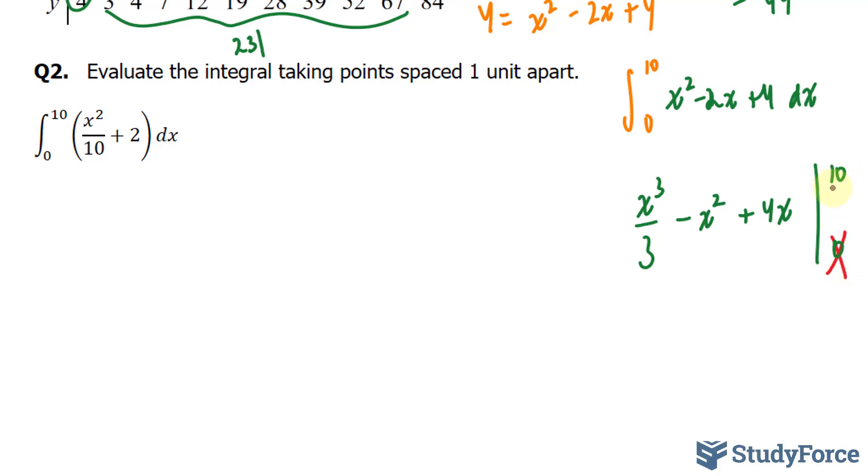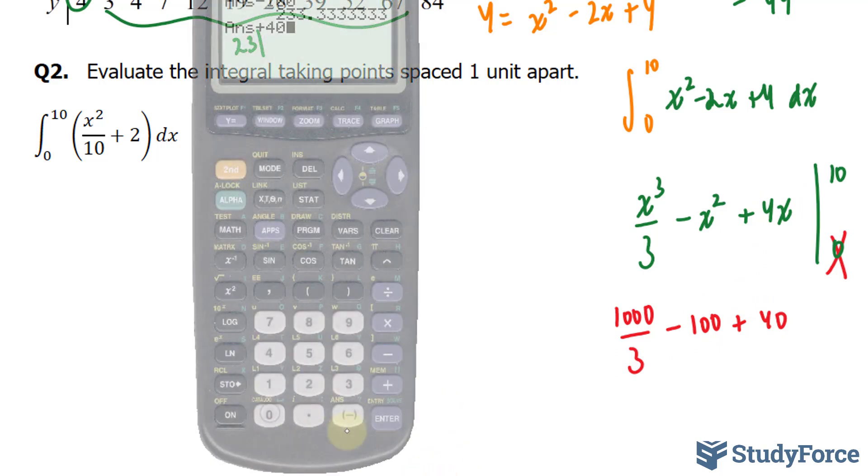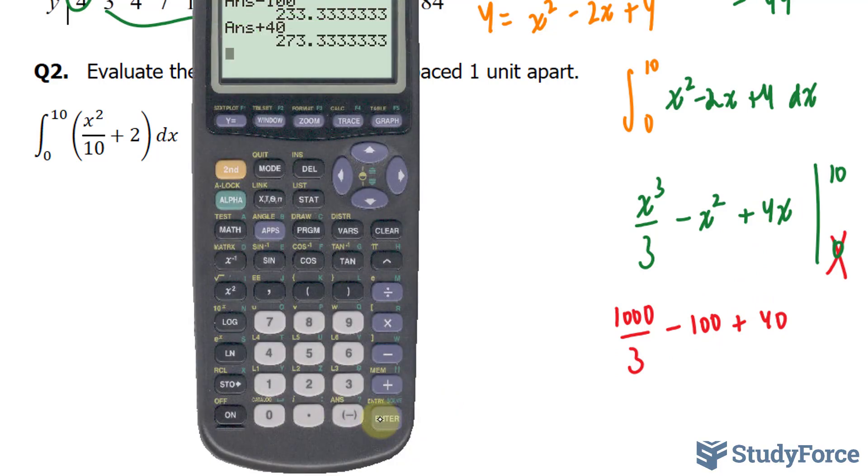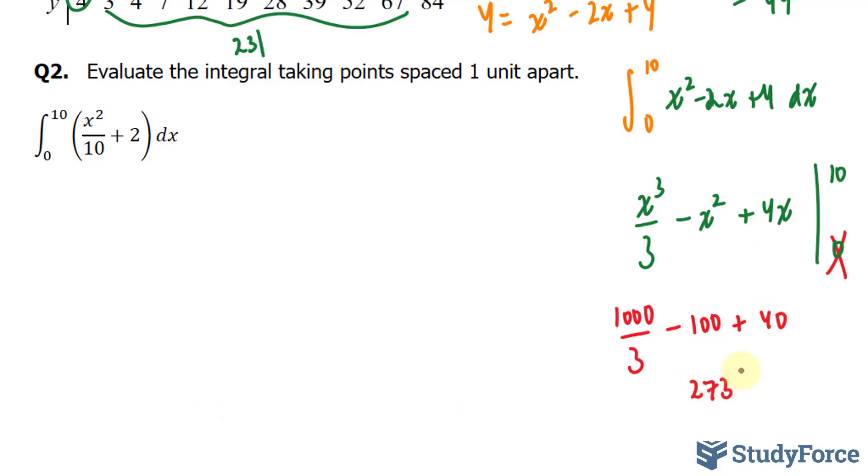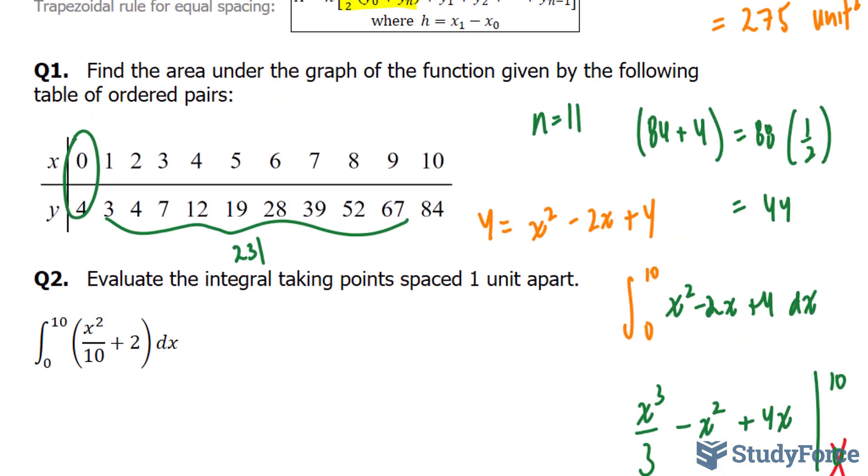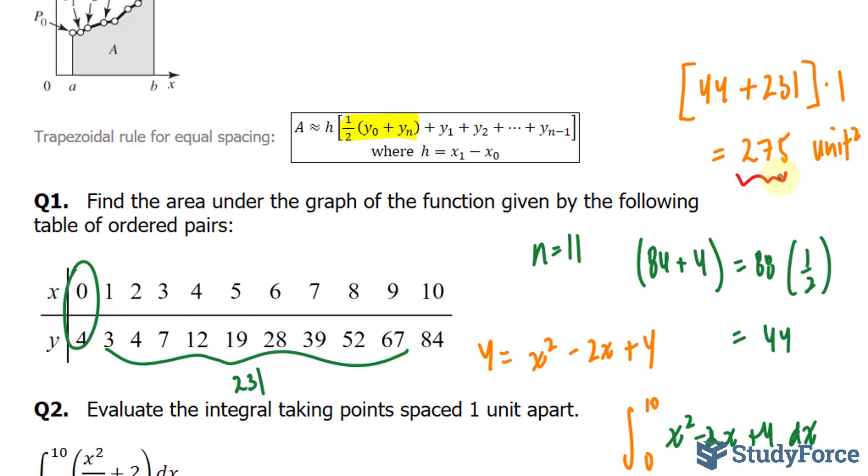Although we still have to find out what it is at 10. We have 10 to the power of 3 is 1,000. 1,000 divided by 3. Minus 10 to the power of 2, which is 100. Plus 4 times 10, that's 40. Using our calculator, you should end up with 273 and a third. Which is quite close to what we came up with using the trapezoidal method.